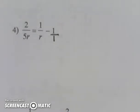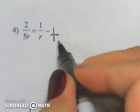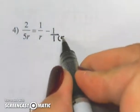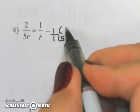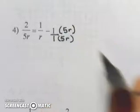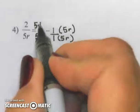So if I put a 1 on the bottom, I can have a 5r here as well. Multiply top and bottom by the 5r and multiply by 5 here.